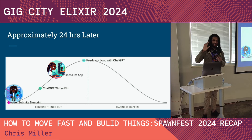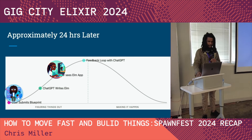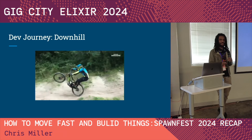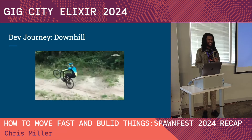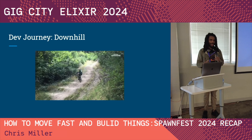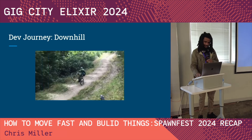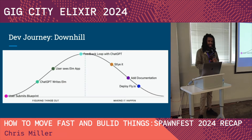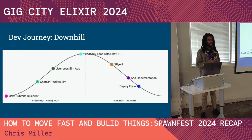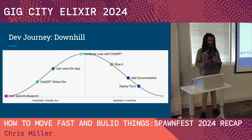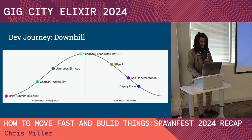We had the feedback loop going with ChatGPT, so now we're trying to figure out what else we need to refine. At this point it looked ugly and some niceties weren't working, and we only had about 24 hours left. We decided we needed to style the thing, add documentation, and deploy it somewhere so the judges could see it without having to set up the local dev environment.